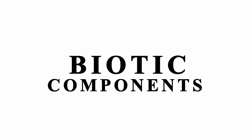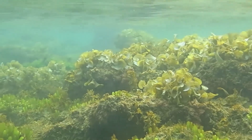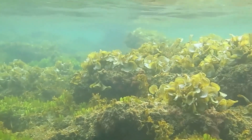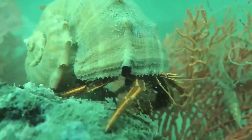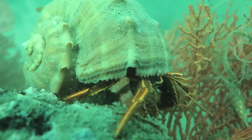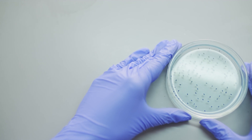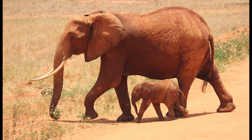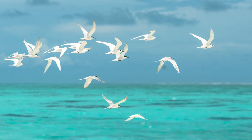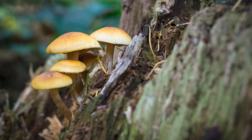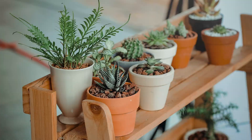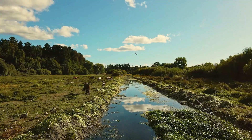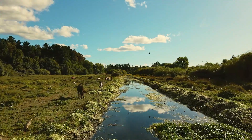Biotic Components. Biotic components are parts of an ecosystem that are alive. Bacteria, animals, birds, fungi, plants, and so on are all examples of biotic parts.